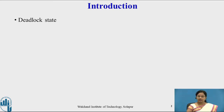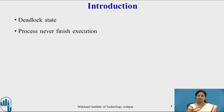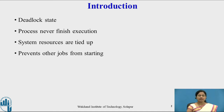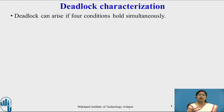As we studied in the previous video, when a process enters a deadlock state, the system is in deadlock state. In this state, processes never finish their execution and all system resources are tied up. As system resources are tied up and processes are in waiting state, they prevent other jobs from starting, so no fruitful task is performed. So how does this situation occur in the system?